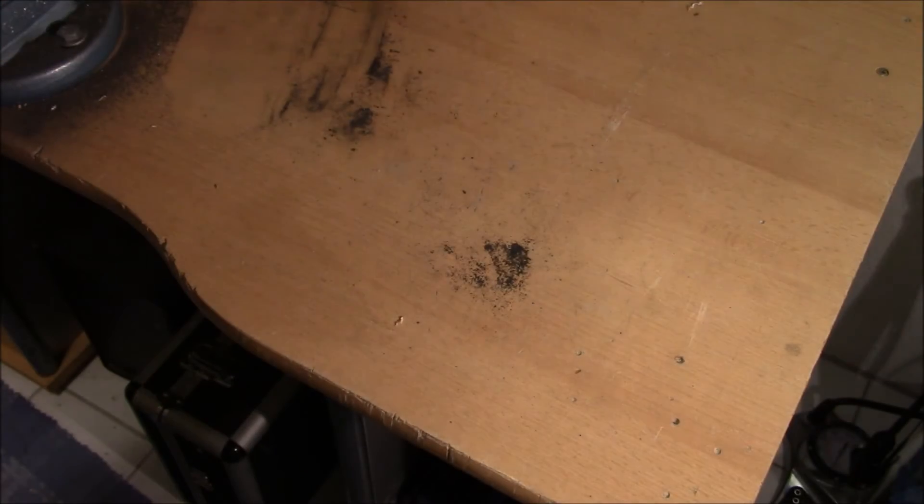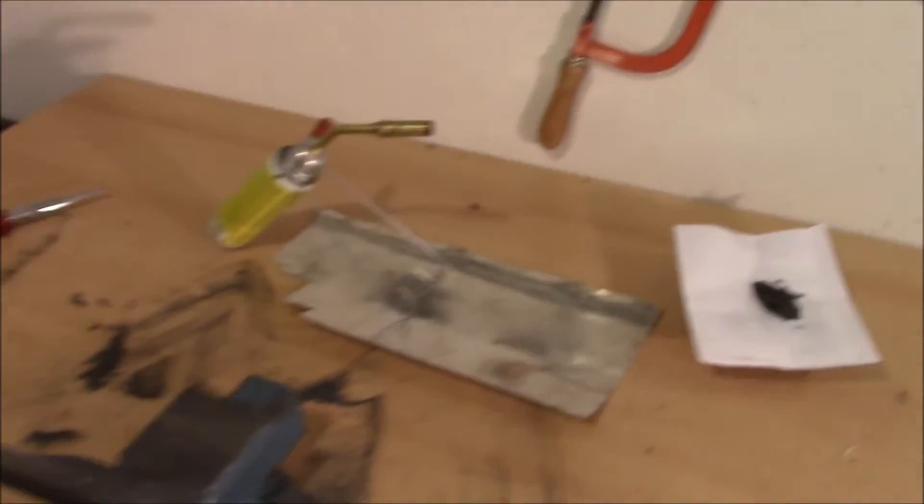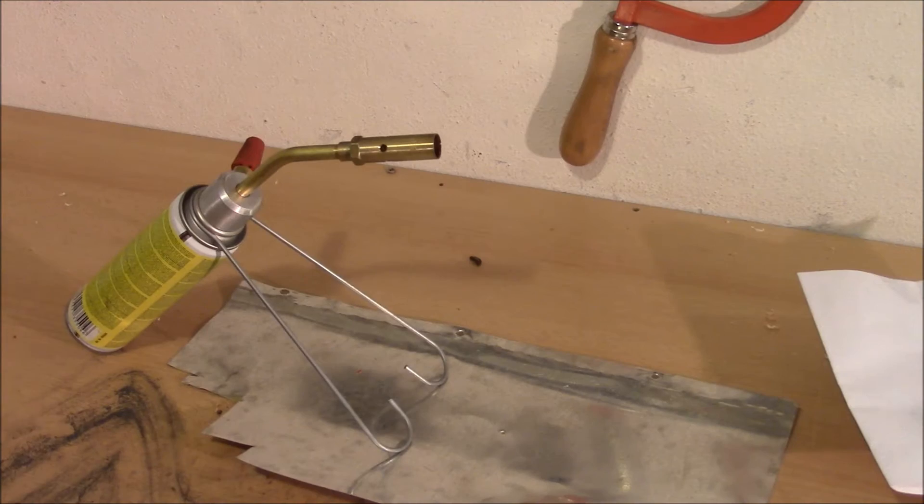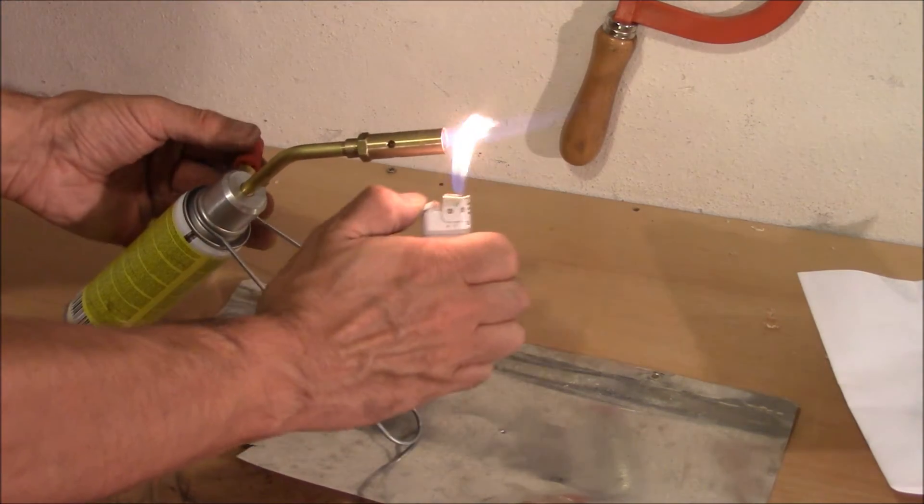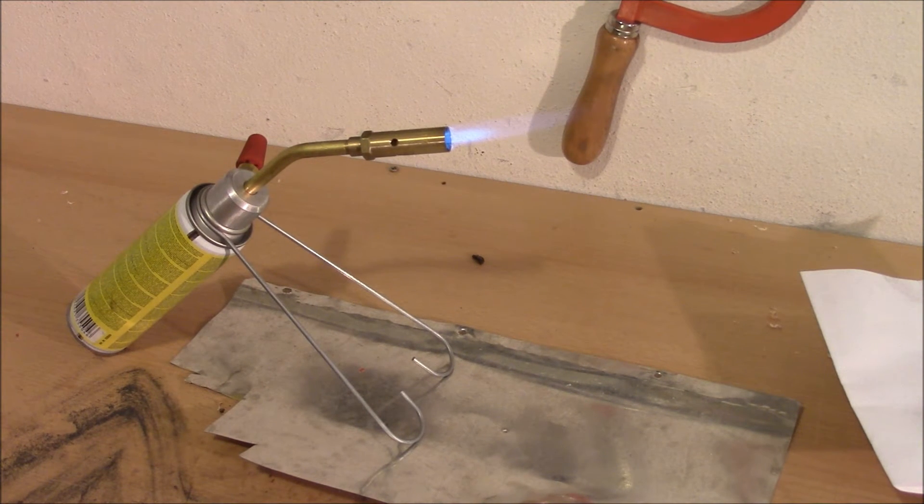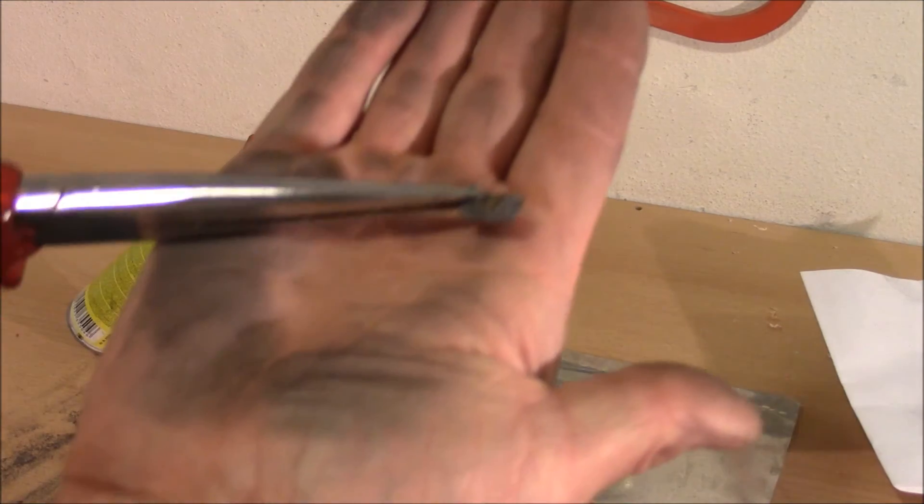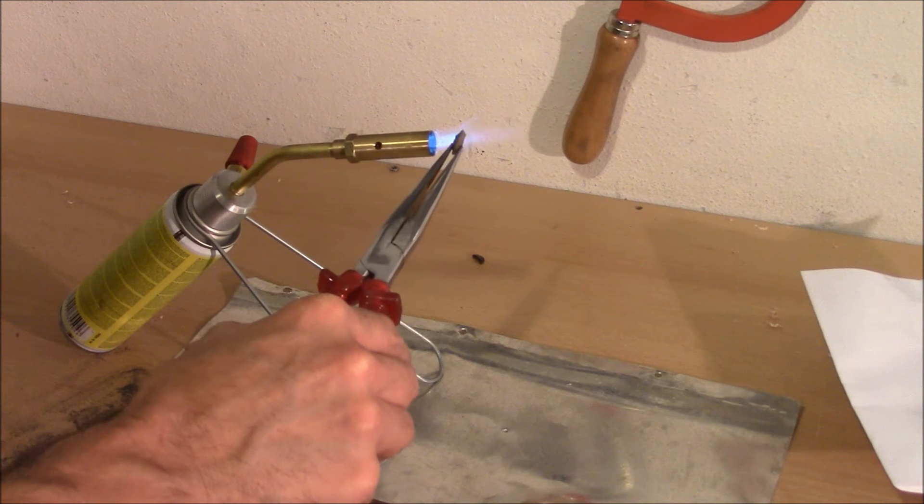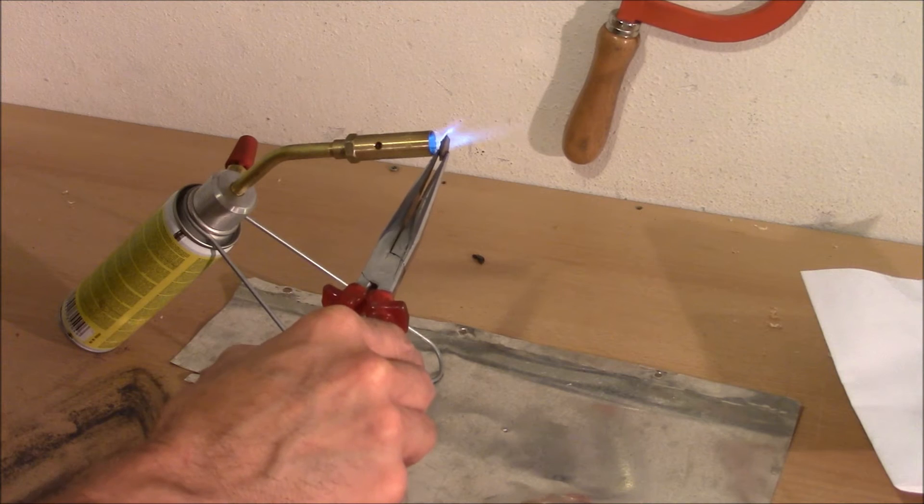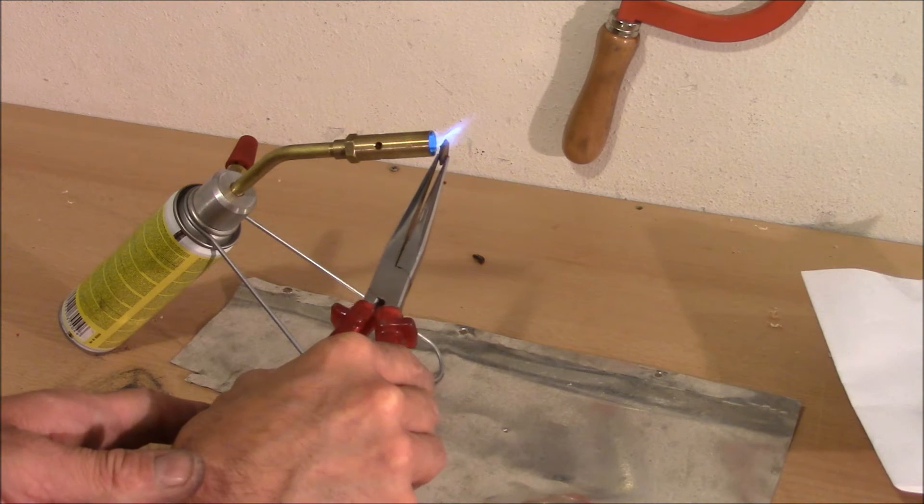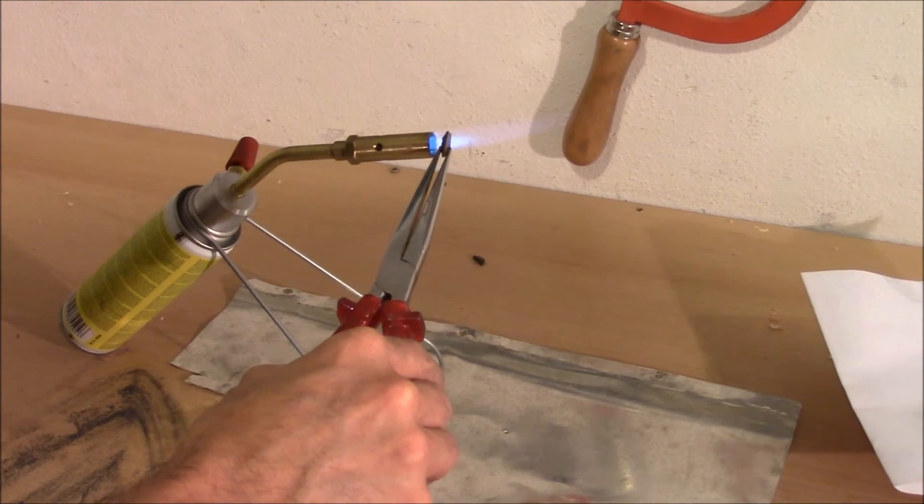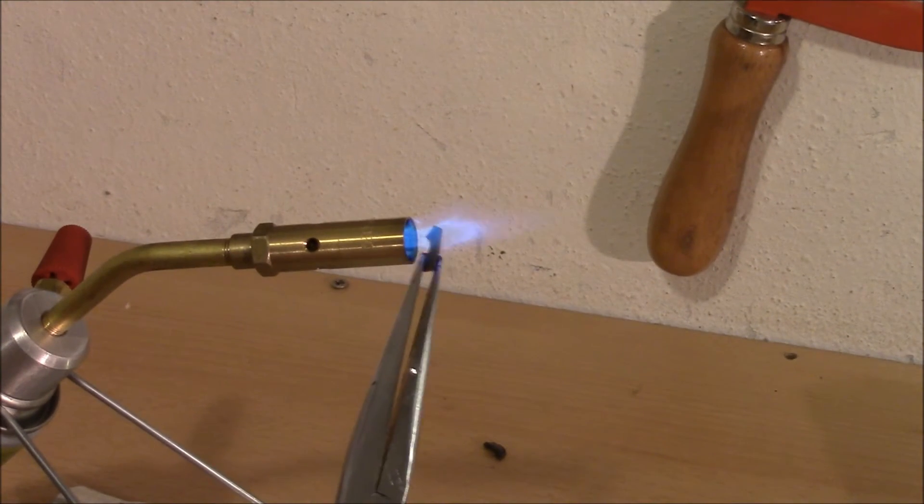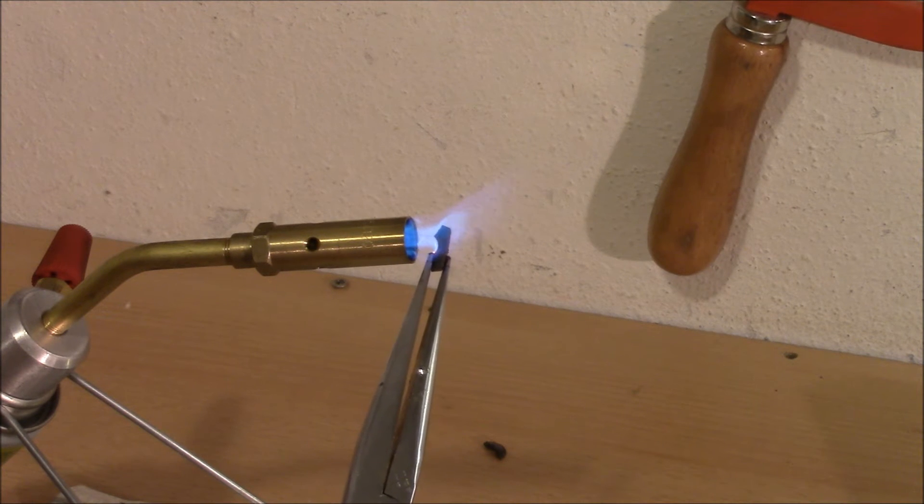And I have bought recently a torch. Here is my torch. I just want to see it melting. Let's see if this goes. Here is a piece of the lock that fell apart. Here I want to check if this melts away. Here we go.